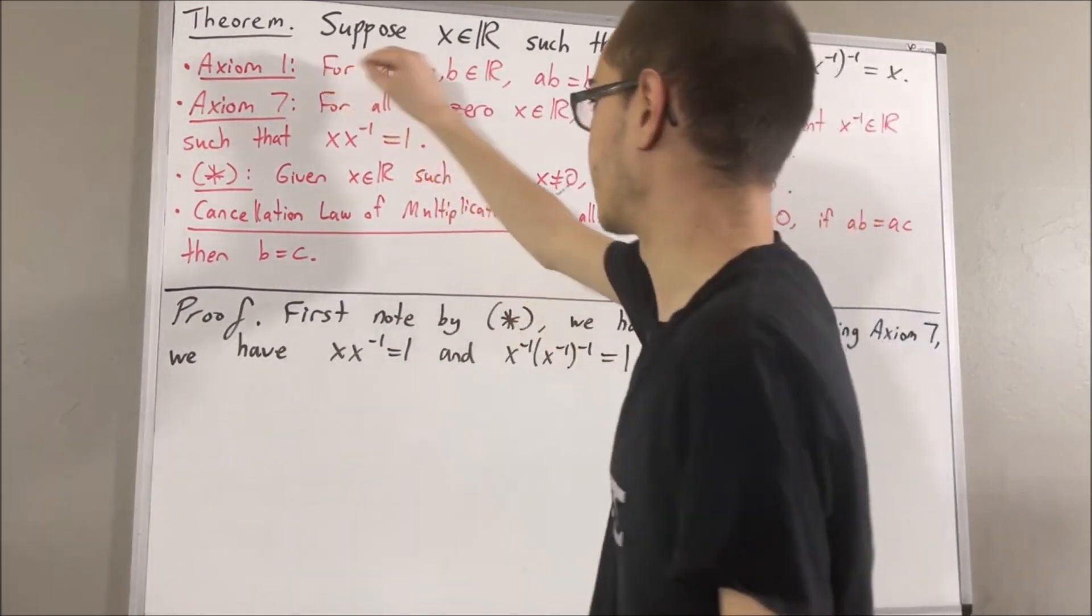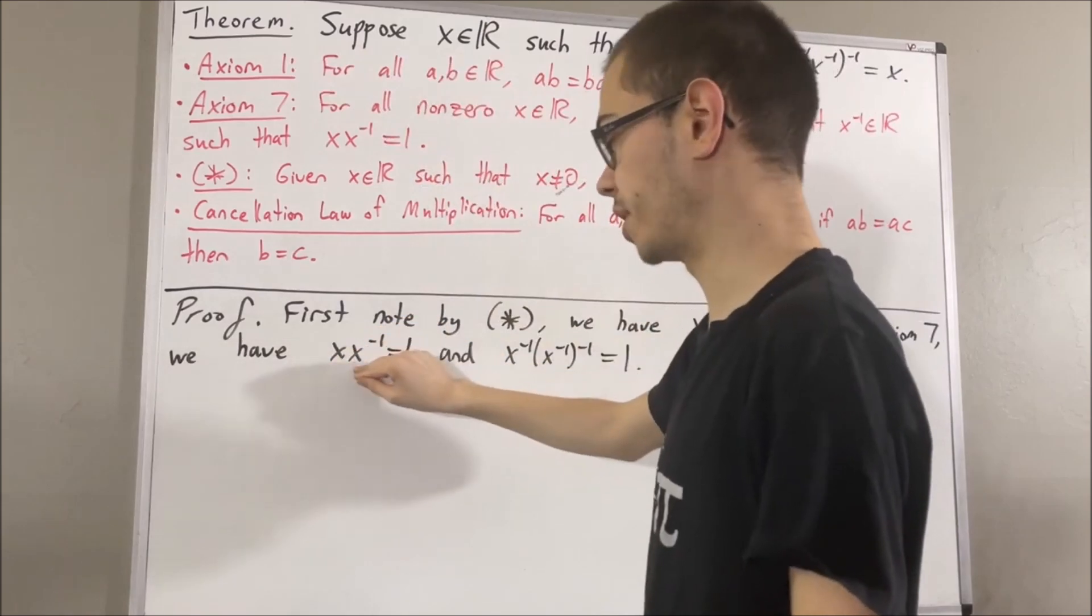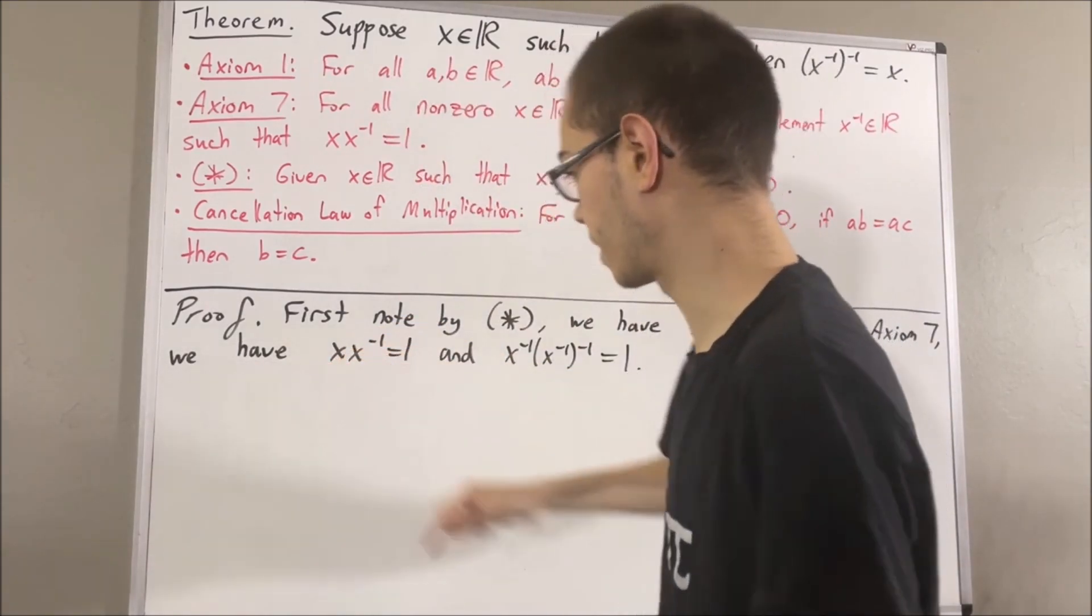And by axiom 1, we know that x times the reciprocal of x is equal to the reciprocal of x times x.